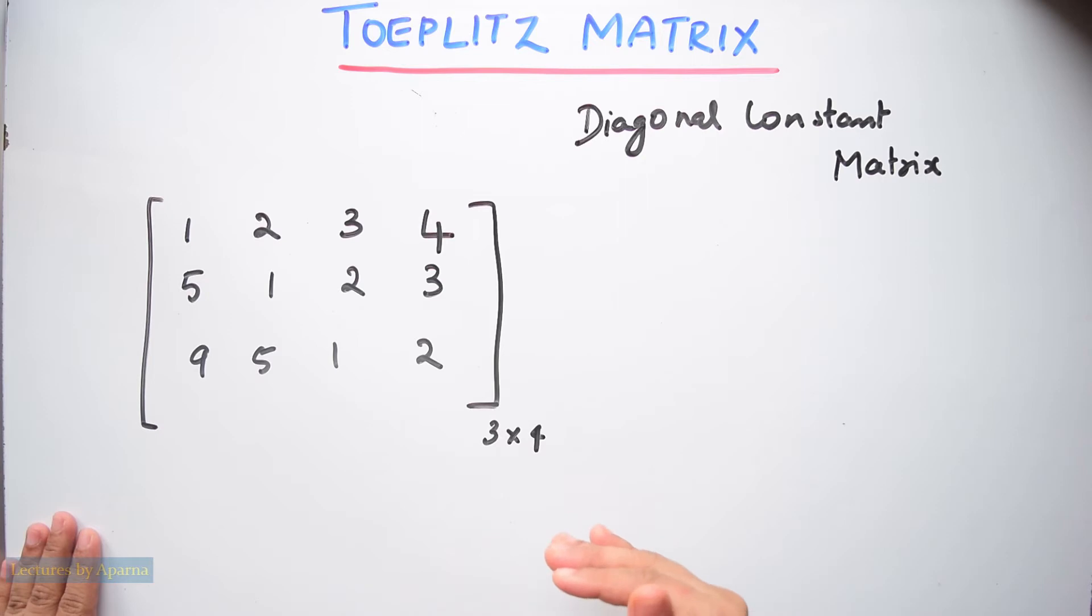A Toeplitz matrix may or may not be a square matrix. In this matrix you can see that each descending diagonal from left to right is a constant. That is, all elements in a diagonal are same.